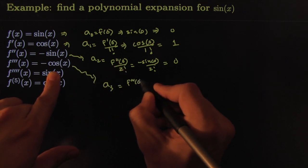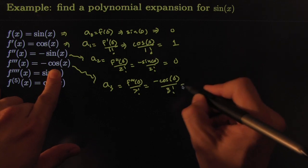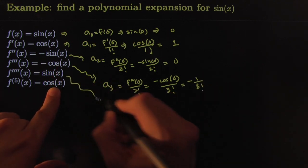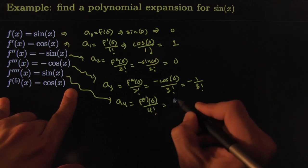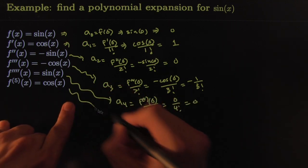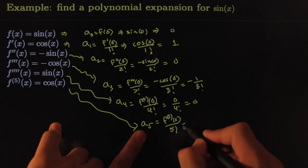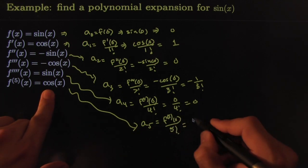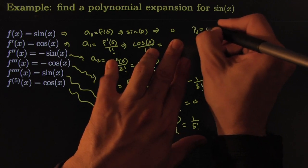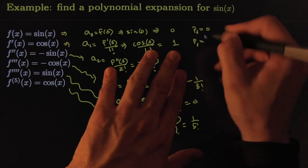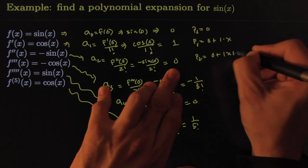From here we get a_3: a_3 would be equal to f'''(0) over 3 factorial. That would be negative cos(0) all over 3 factorial, or said differently, negative 1 over 3 factorial. From this one we get a_4: a_4 is equal to the fourth derivative at 0 divided by 4 factorial. This gives me 0 over 4 factorial, which is equal to 0. This one, a_5: you're still awake? It would be the fifth derivative evaluated at 0, divided by 5 factorial, which is equal to—cosine, that would be 1 over 5 factorial. So put all this together: this means that the first polynomial approximation p_0 is just 0. The first derivative, the degree 1 approximation, would be 0 plus 1 times x. This one would be the p_2 approximation: 0 plus 1x plus 0x².